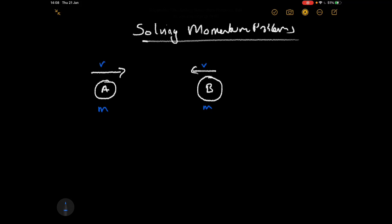The way we handle this is to remember that momentum is a vector, which means direction matters. By convention, we assign one direction to be positive, so anything going that way has a positive velocity and therefore a positive momentum. Anything going the other way has a negative velocity and therefore a negative momentum, and if we do that, we can solve problems quite nicely.